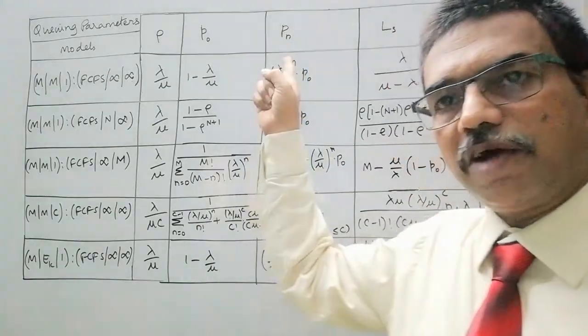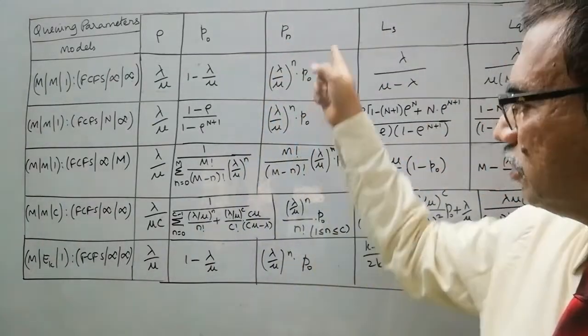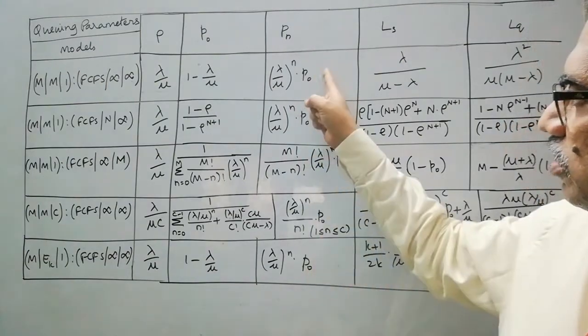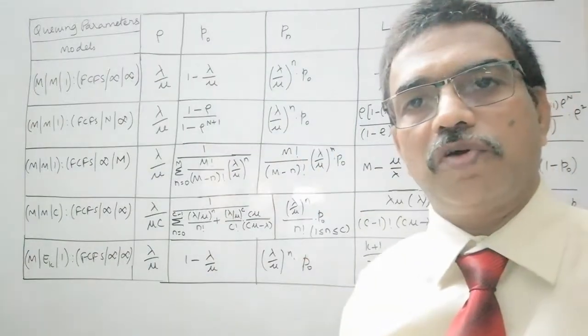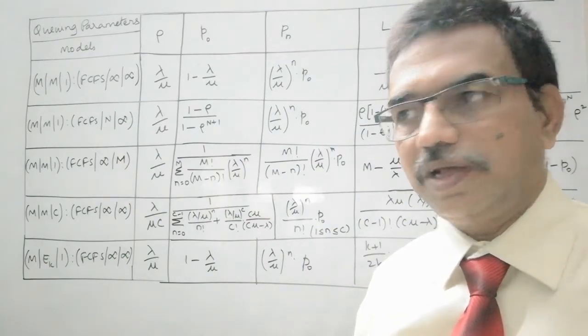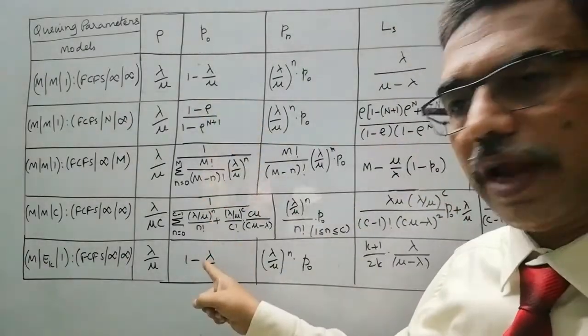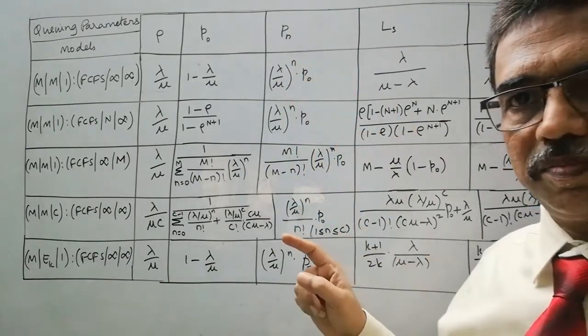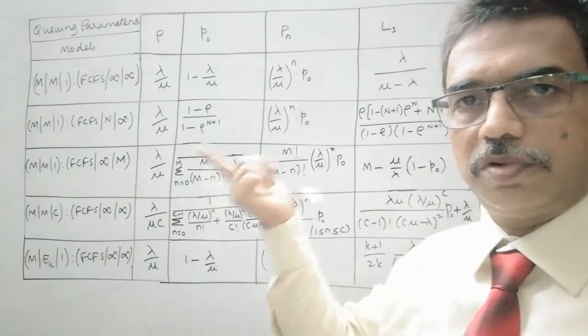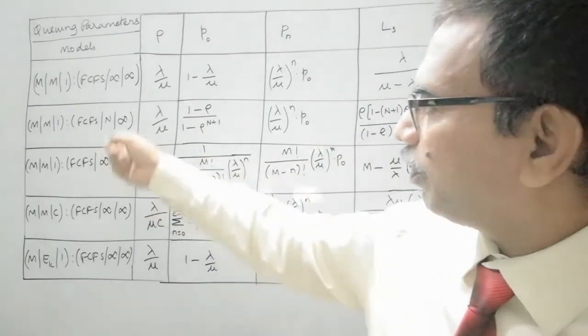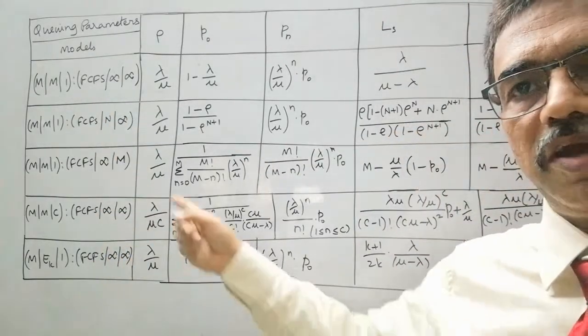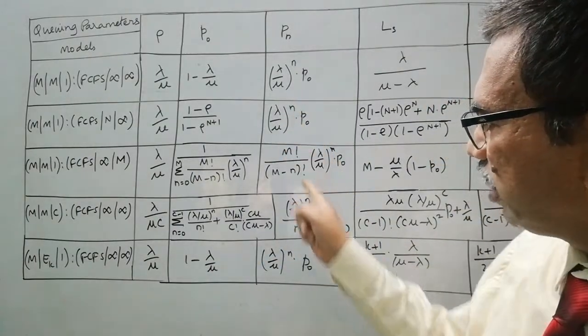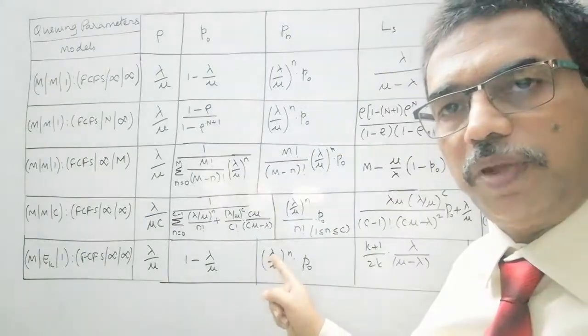Whereas, coming to the probability of having n customers, Pₙ, it is similar. In these three models, for these three models, it is same. The expression is (λ/μ)ⁿ × P₀. Once P₀ is calculated, you can easily calculate Pₙ, where n varies from 1 to, may be, depending on the, it may be infinite or n, like that. So we can use these relations to find Pₙ.